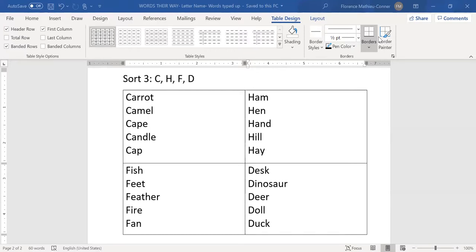The words starting with c were carrot, camel, cape, candle, and cap. And you will notice that the word cape is c-a-p-e, and the word cap is c-a-p. Cap, c-a-p, is a short a. Cape, c-a-p-e, has an e at the end, and the e at the end makes the vowel say its name right before it. So cape and cap.